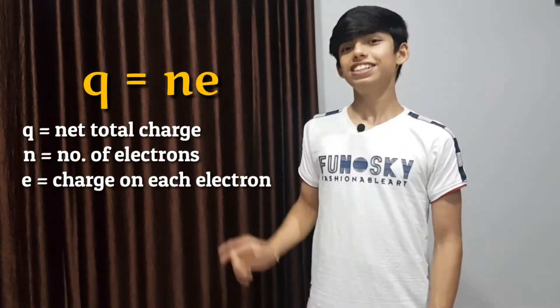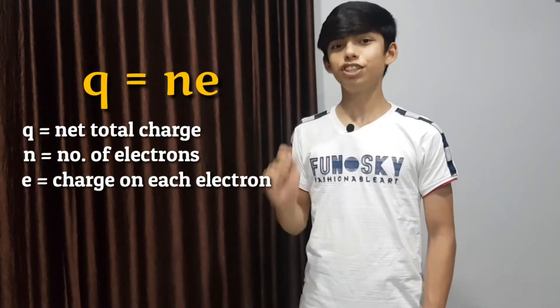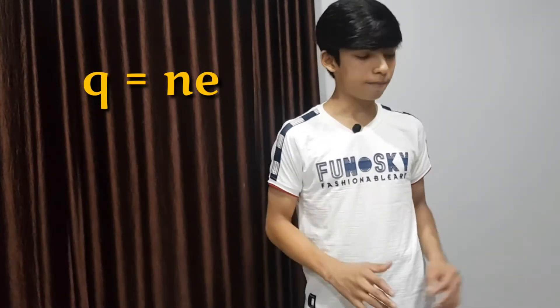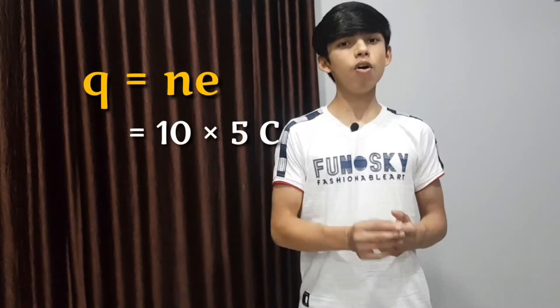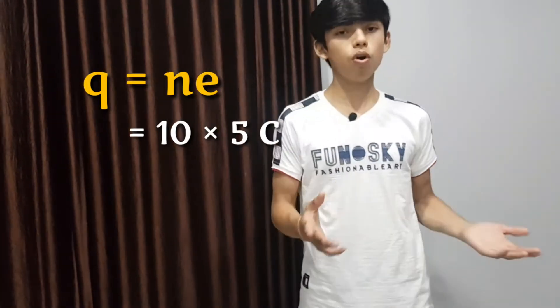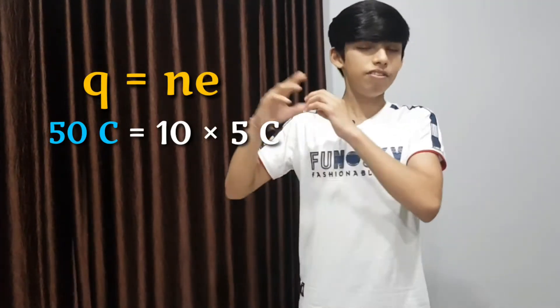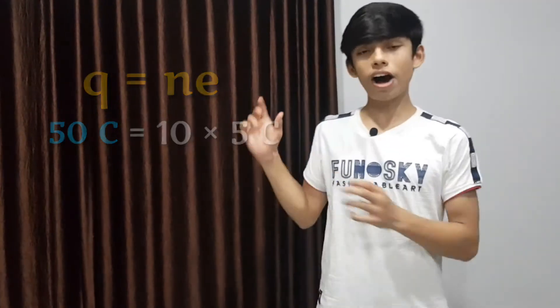Now after all this, one more thing: we have one equation which is Q = N × E. Q is the net charge, N is the number of electrons, and E is the charge on one single electron. For example, let's say you have 10 electrons, and one electron contains a charge of 5 coulombs. So what is the total charge? It is 10 multiplied by 5, which is 50 coulombs. Similarly, here we have the same equation.